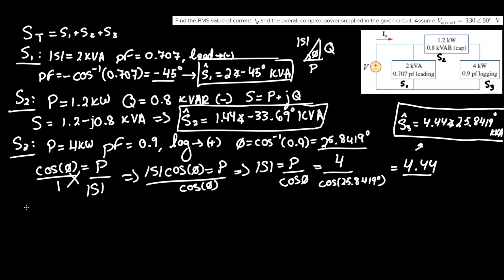So now let's apply that property again where S_T equals S1 plus S2 plus S3. I'm going to rewrite that for clarity: 2 angle negative 45 degrees, this is in kVA, plus 1.44 angle negative 33.69 degrees, plus the final load 4.44 angle 25.8419, this is all in kVA, where the sum is equivalent to 6.6142 angle negative 2.406 degrees kVA.